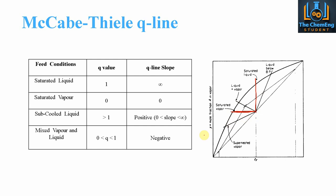For sub-cooled liquids the gradient is greater than 1, so Q is greater than 1. For a mixed vapour and liquid feed, the Q line slope is negative — Q is between 0 and 1. For superheated vapour with mixed vapour and liquid, Q is between 0 and 1 giving a negative slope. When Q is greater than 1 the slope is positive, between 0 and infinity. The feed composition goes straight up until it hits the 45-degree line, then we apply the Q line to find the intersection with the operating line.